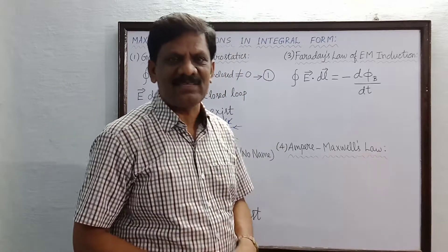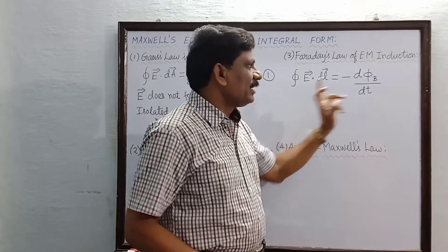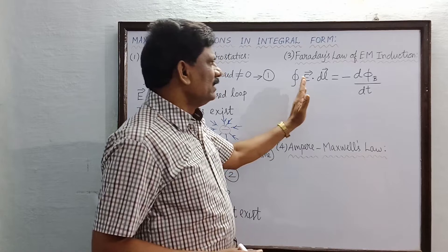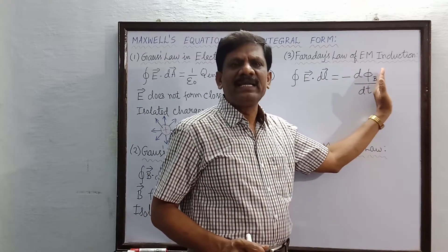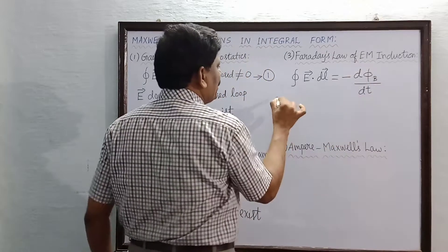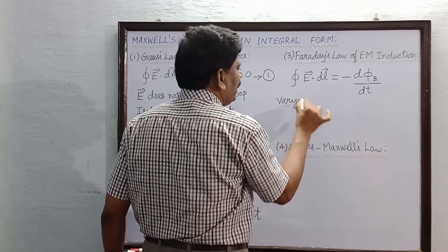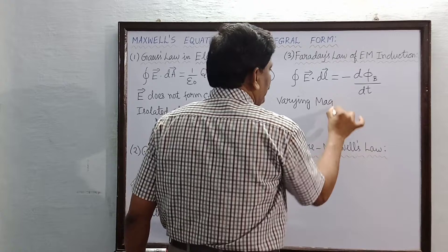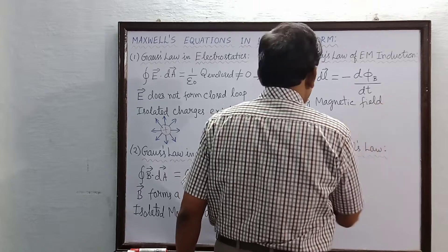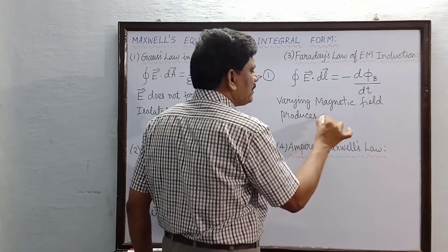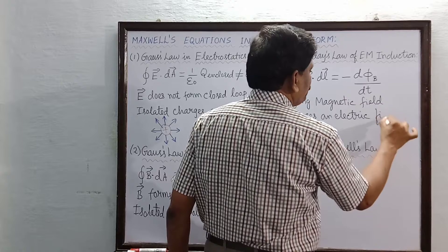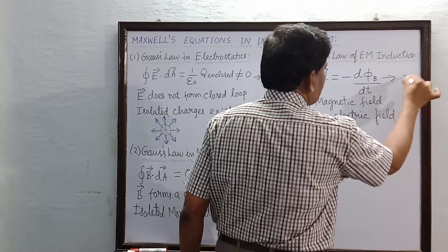D by DT means it is the rate of change of magnetic flux. The left side is electric field E, and the right side is magnetic flux phi B. The electric field and the rate of change of magnetic flux or magnetic field are related. This very clearly indicates that a varying magnetic field produces an electric field. This is equation 3, Faraday's law of electromagnetic induction.